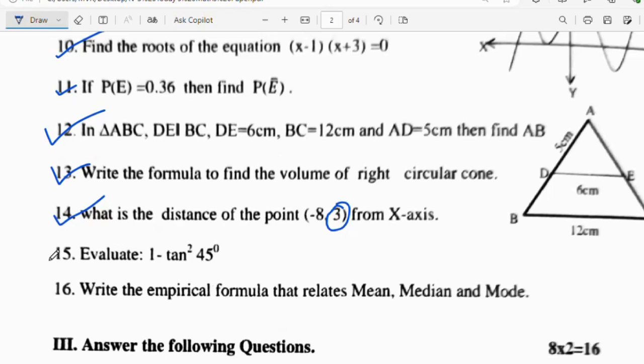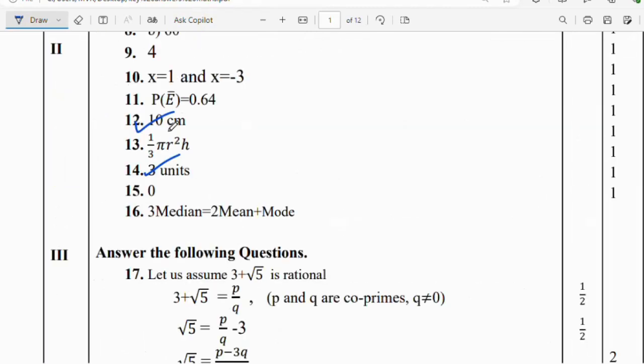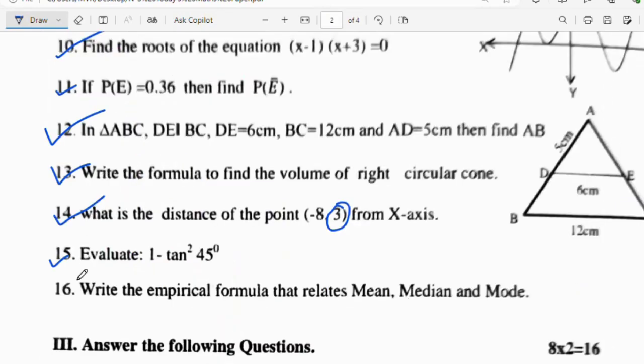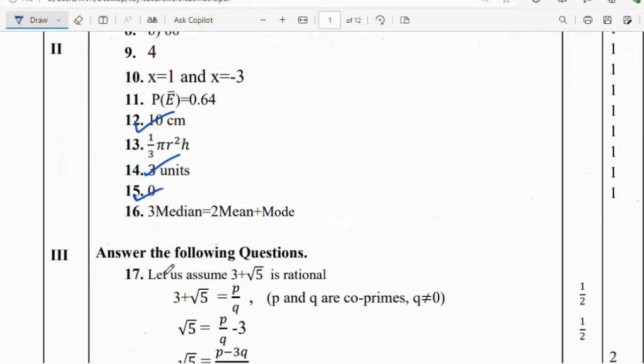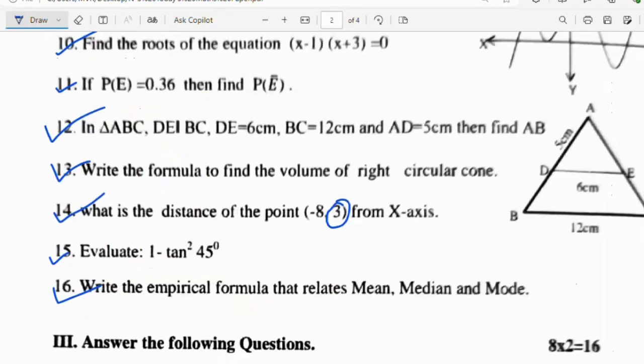Question number 14: What is the distance of the point (-8, 3) from the x axis? From the x axis, we will get the answer 3 units, the right answer. If they asked origin, you take the formula square root of x² plus y², but they asked from x axis, so directly you can write 3 cm. Question 15: Evaluate 1 minus tan²45°. Tan 45° is 1, so 1 minus 1 is 0. Question 16: Write the empirical formula that relates mean, median and mode. 3 median is equal to 2 mean plus mode.